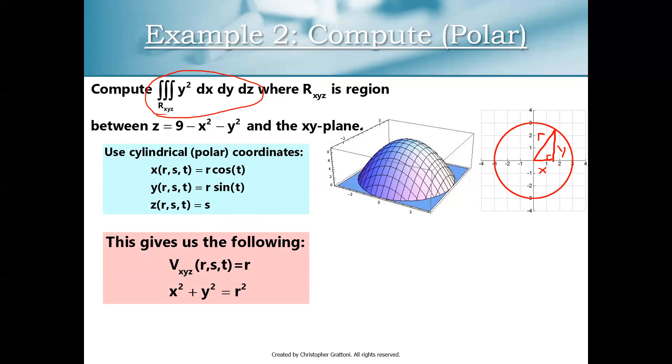Next we need to figure out our limits of integration if we want to do this triple integral in cylindrical coordinates. So here are the quantities we've got here. I have r going from 0 to 3, s going from 0 to 9 minus r squared, and t going from 0 to 2 pi.